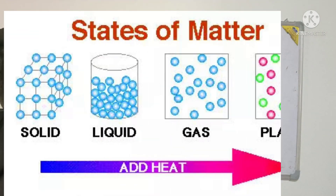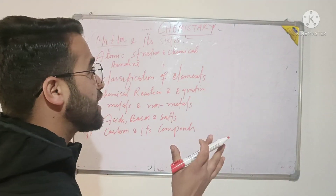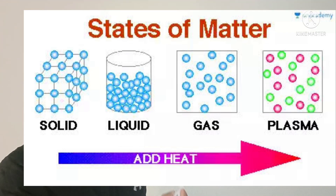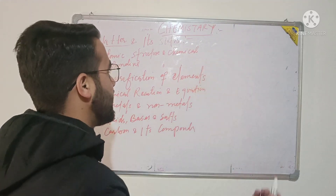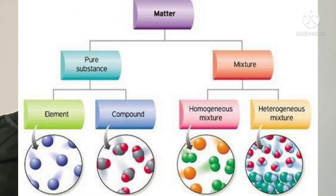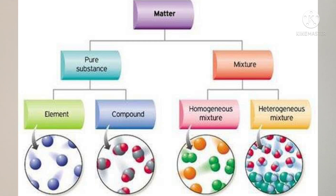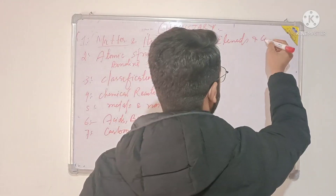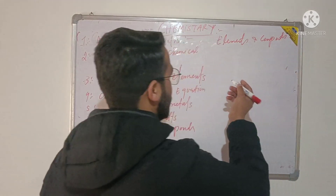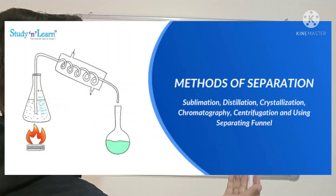First, let's talk about matter and its states. On the basis of physical composition, you have solids, liquids and gases. On the basis of chemical composition, you will study pure substances and mixtures. Pure substances are further divided into elements and compounds. You will also study processes like sublimation.